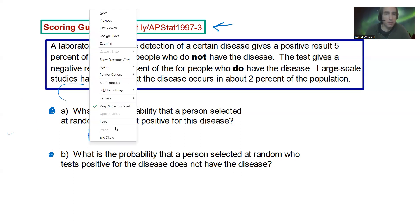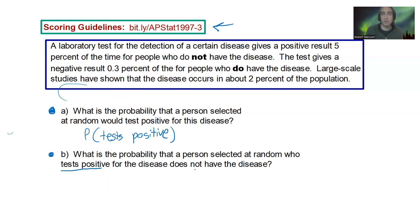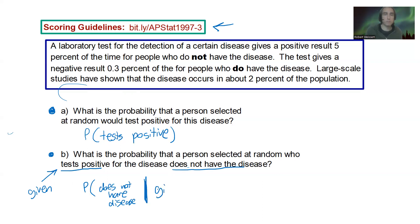For the first question, what's the probability that a person selected at random would test positive? We're looking at the probability they test positive whether they have the disease or not. For part B, what's the probability that a person selected at random who tests positive does not have the disease? This is a conditional probability — does not have disease given test positive.